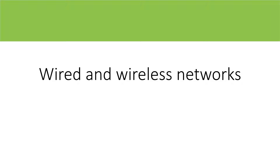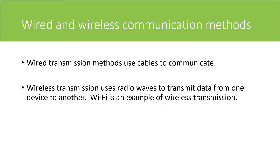In this presentation we examine wired and wireless networks. The difference between wired and wireless communication methods is that wired transmission methods use cable to communicate, whereas wireless transmission methods use radio waves to transmit data from one device to another.